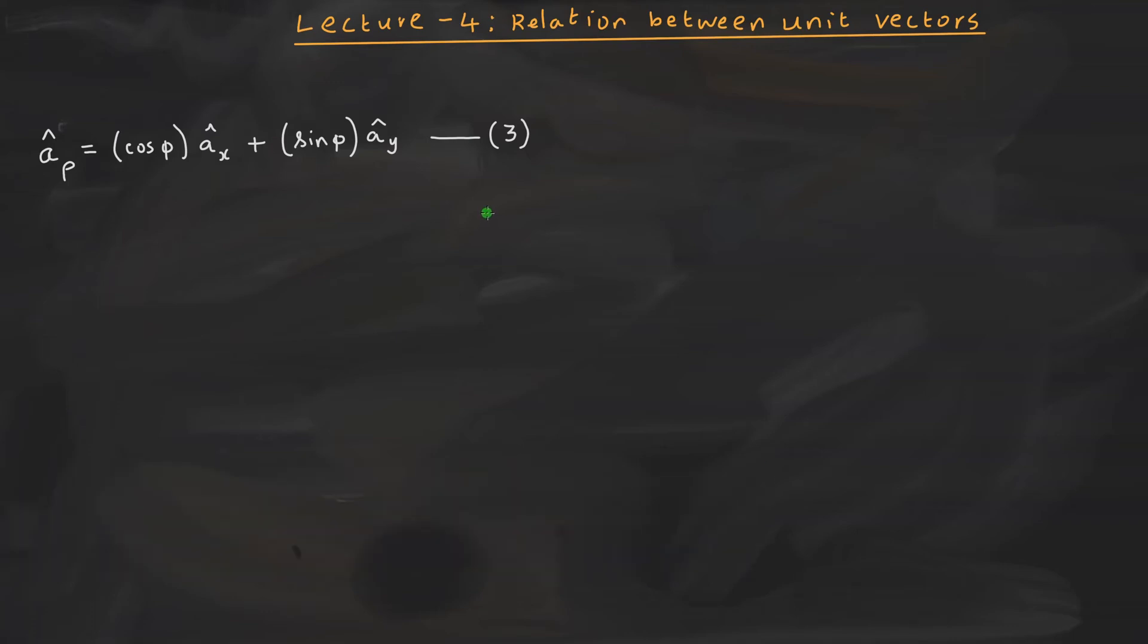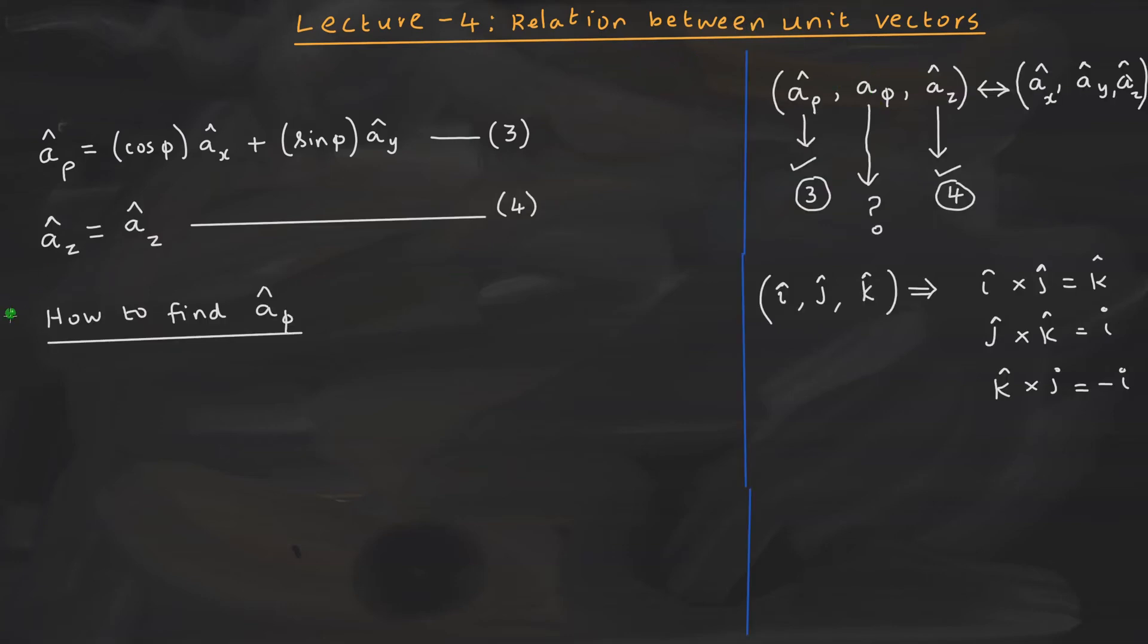Let me state what is the aim or objective of the problem. Our objective is that we are interested to find out the relation between unit vectors in the cylindrical polar system and the unit vectors in the Cartesian system. That is the idea.